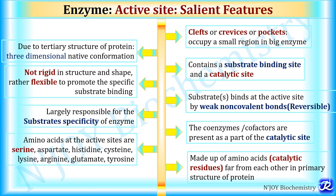The active site is largely responsible for the substrate specificity of the enzyme. The amino acids present at the active site include serine, aspartate, histidine, cysteine, lysine, arginine, glutamate, and tyrosine. These are the various salient features of the active site of enzyme.